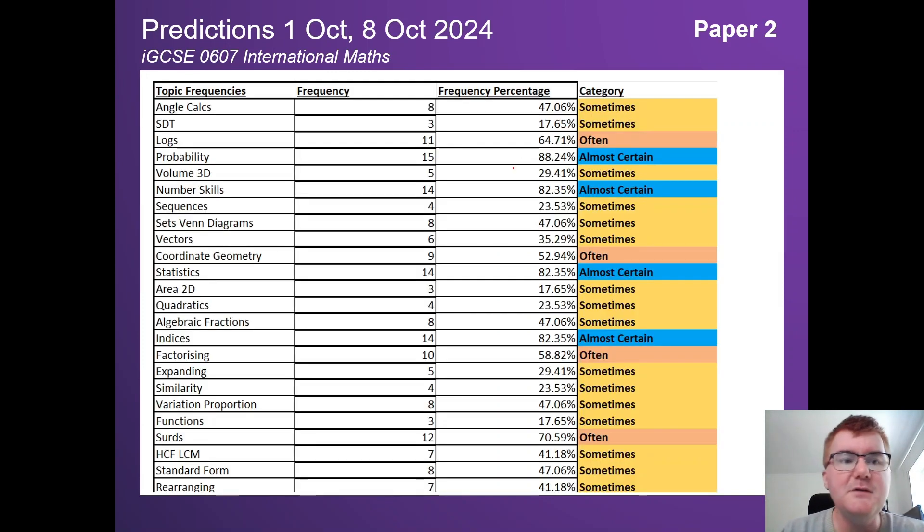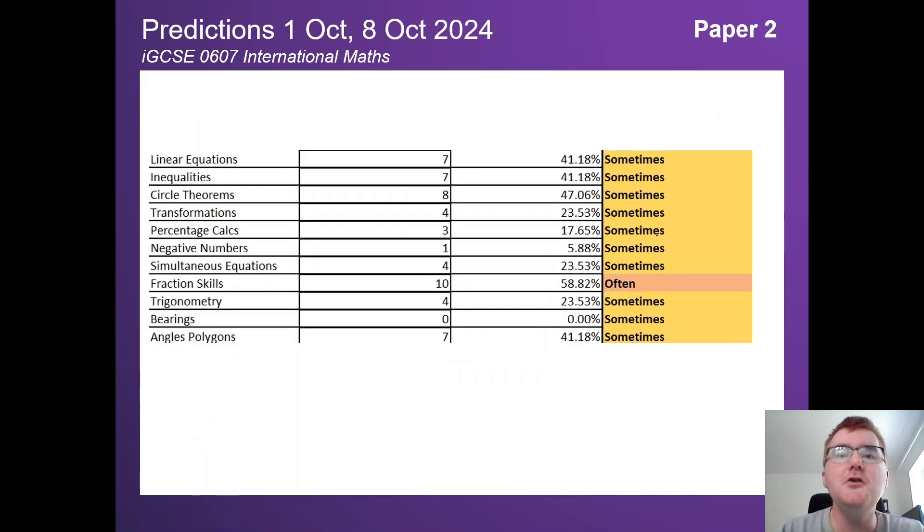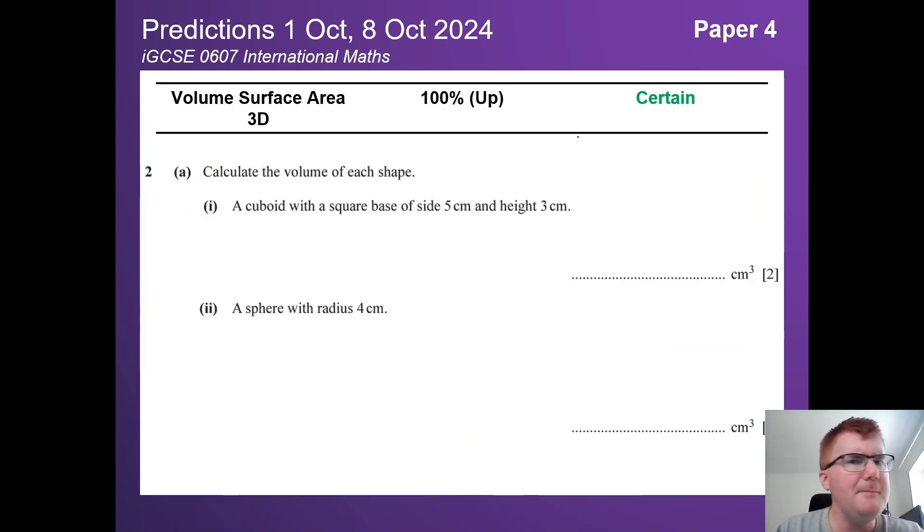You can see the frequencies here of the topics I've really focused on. Statistics is also something to consider, usually something like a stem and leaf diagram or some kind of basic table manipulation. However, on to paper 4. This is the last part of paper 2. Paper 4 is of course the big paper, the one that really makes the difference in terms of the marks.